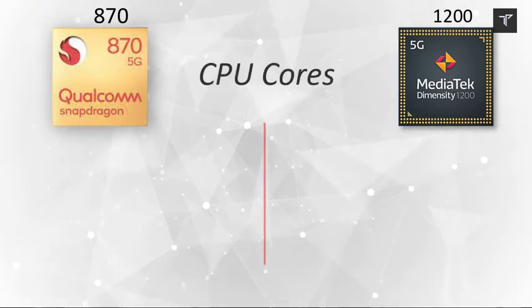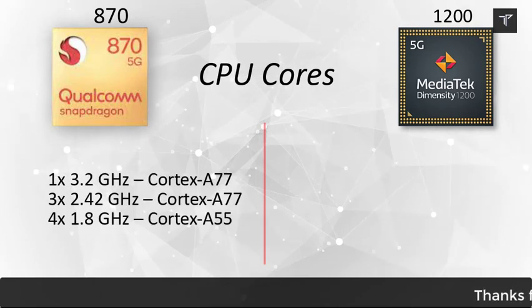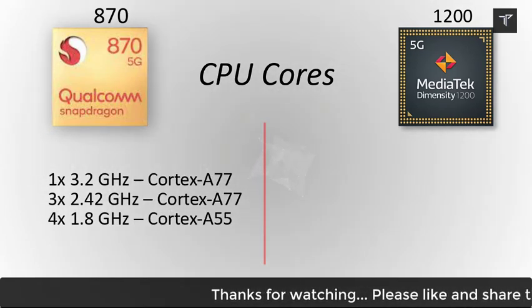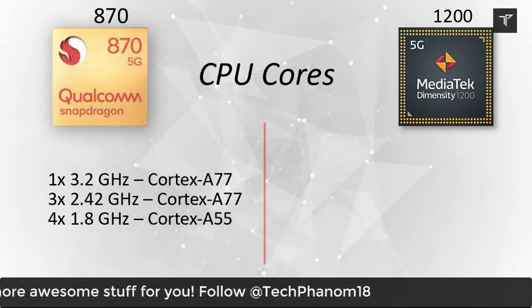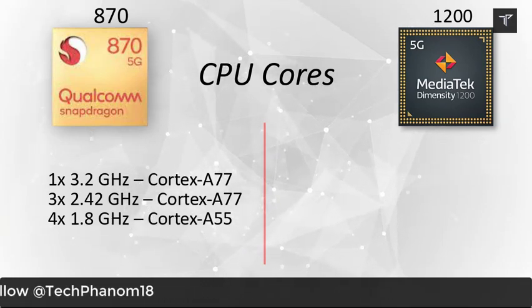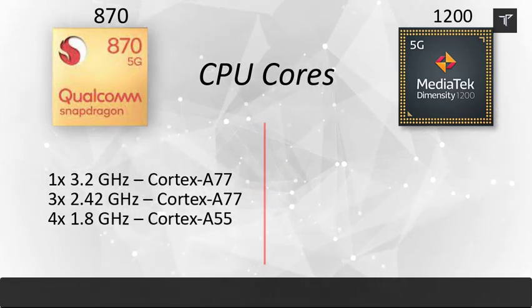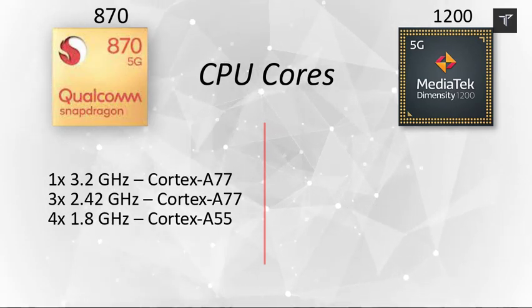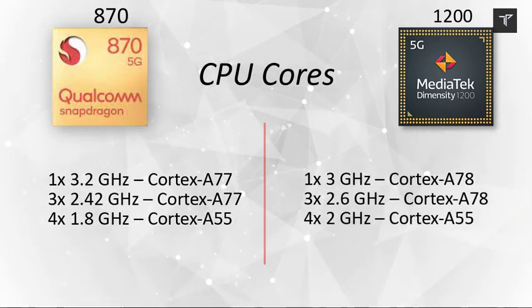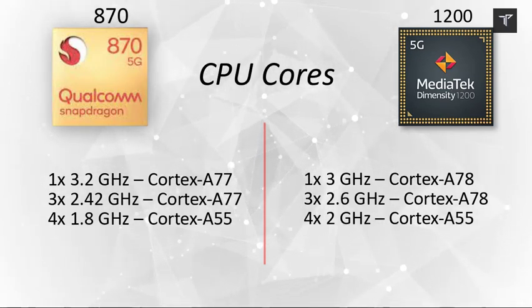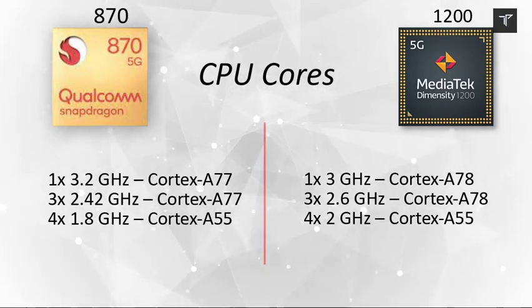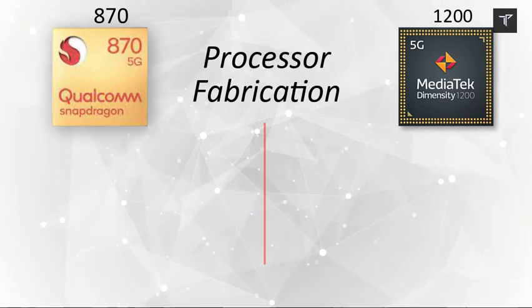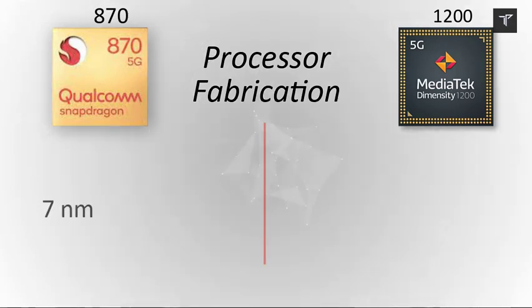Looking at the CPU cores, the Qualcomm Snapdragon 870 has one prime core at 3.2 GHz Cortex-A77, three cores at 2.42 GHz Cortex-A77, and four cores at 2.0 GHz Cortex-A55. The MediaTek takes a slightly different approach with one core at 3.0 GHz Cortex-A78, three cores at 2.6 GHz Cortex-A78, and four cores at 2.0 GHz.